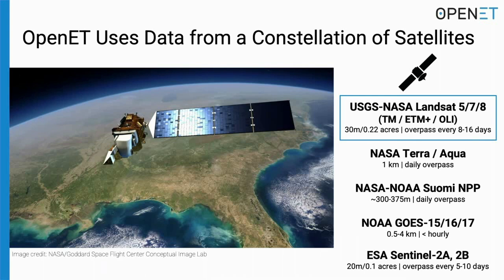OpenET is driven with data from a constellation of satellites, including Landsat, the Terra and Aqua satellites, the NASA-NOAA SUOMI NPP mission, NOAA GOES satellites, and we're working on integrating data from the Sentinel-2 mission operated by the European Space Agency. Landsat has been the workhorse, providing concurrent optical and thermal measurements at 30 to 100 meter resolution that allows us to produce field-scale ET data.